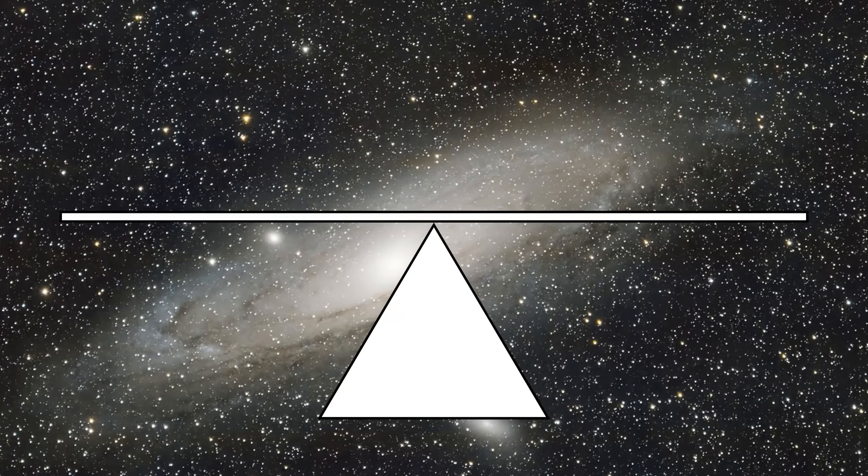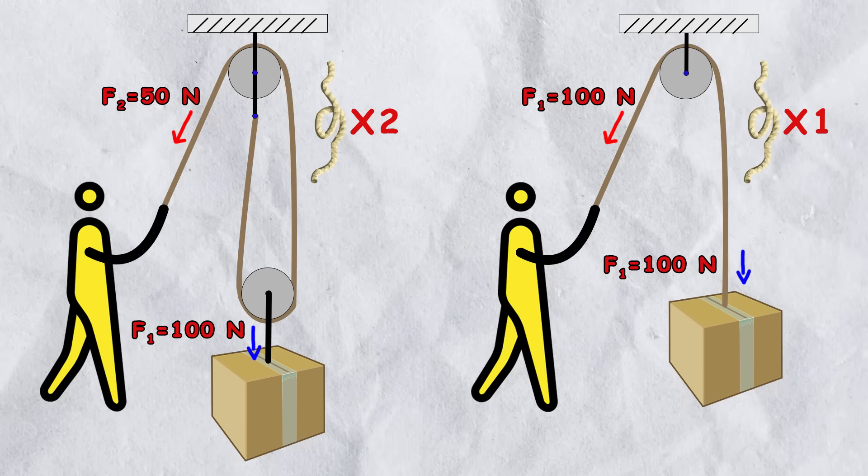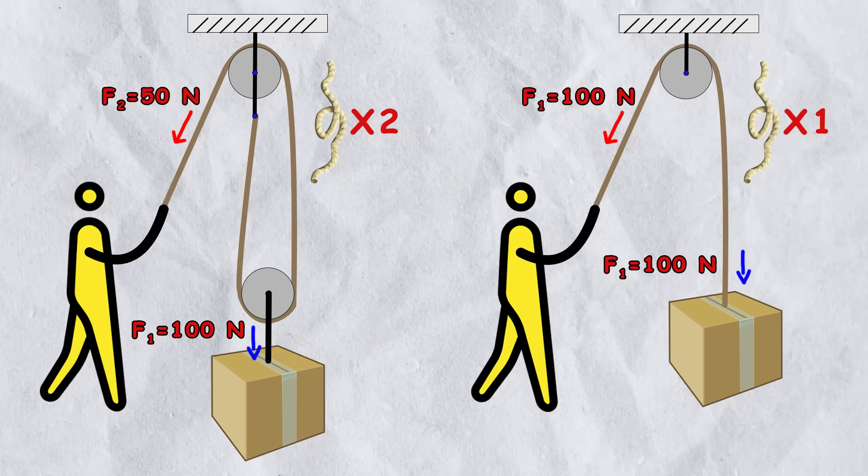But since the universe is all about balance, this advantage is compensated for by the length of the rope. If you halve the force, you must pull double the rope, and so on.